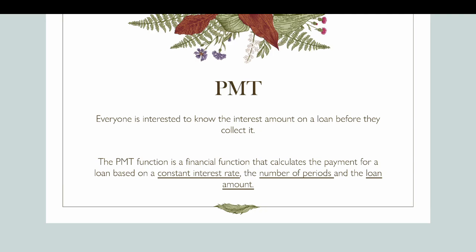The PMT function is a financial function that calculates the payment for a loan based on three major parameters: the constant interest rate, the number of periods you want to pay the loan, and the loan amount. You need these three parameters to know how much you would pay as interest until you finish paying the loan. The PMT function is available for Office 365 and Excel versions 2019, 2016, 2013, 2010, and 2007.